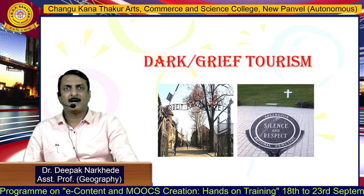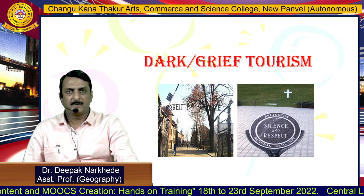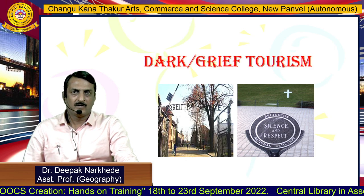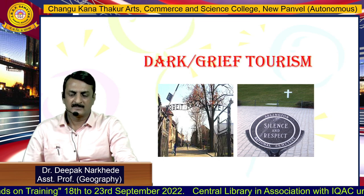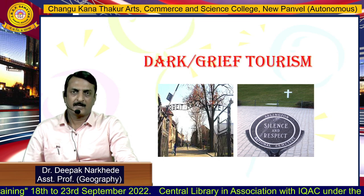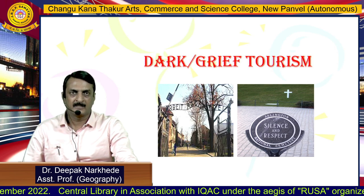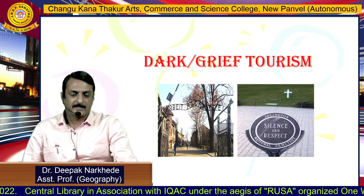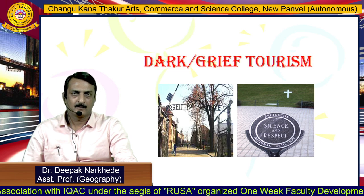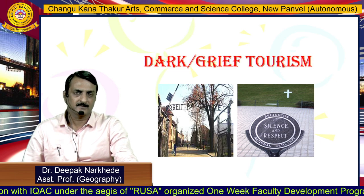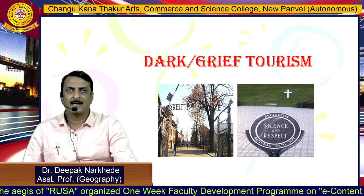The next type is dark or grief tourism, also called black tourism, where people visit places where dark events have occurred. In the first photograph, you can see a place where Hitler killed many Jewish people in Germany. In the second photograph is the site of America's twin towers demolished in a terrorist attack. People visit such places to pay homage to those who died in those events. This is called dark or grief tourism.